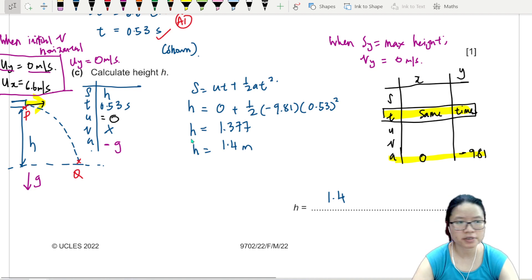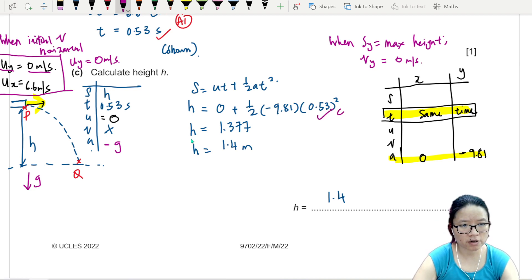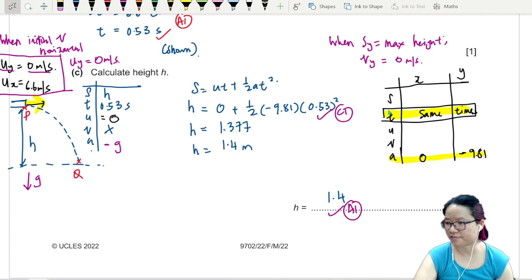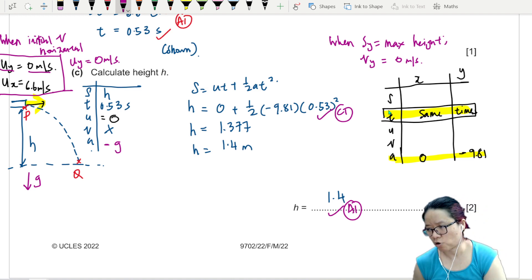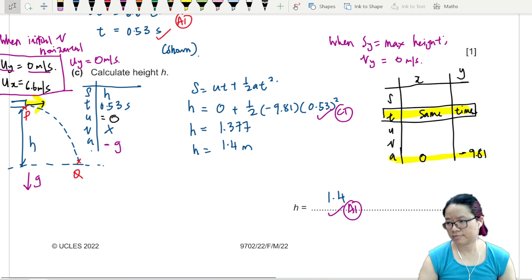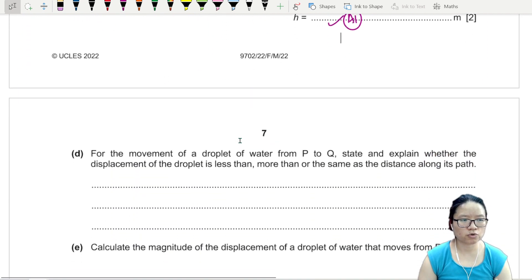One mark is when you use this line correctly. Everything you substitute correctly in this line. Then the final mark is the answer, A1. Return to 2 significant figures. Try not to use 10. Always use 9.81. That's it for this one. We're going to move on to part B.